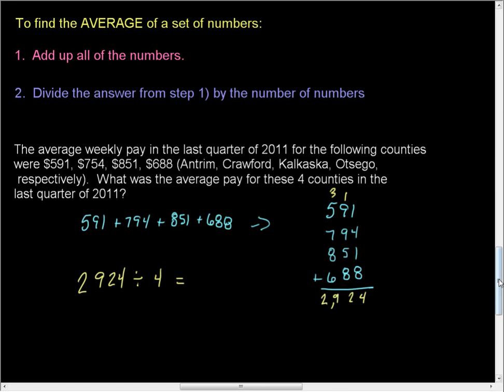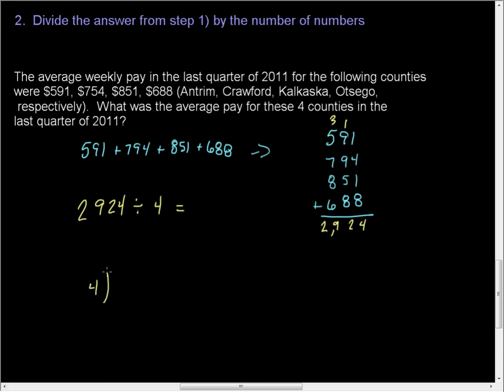In order to do that, we have to go ahead and 4 divides into 2924. It does not divide into 2, and therefore we go to 29. So 4 goes into 29, 7 times. 7 times 4 is 28. That gives us a 1 when we subtract. Bring down the 2. 4 goes into 12 3 times. 3 times 4 is 12. Subtract. We get 0. Bring down the 4.